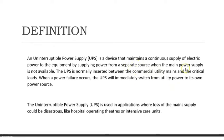UPS is a device that maintains a continuous supply of electric power to the equipment by supplying from a separate source. When the main supply is working we have main supply, but when the main supply is turned off, the UPS still provides electric supply to the equipment. UPS is normally inserted between the commercial utility mains and the critical loads.